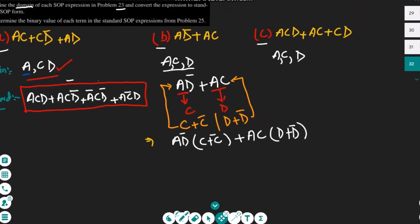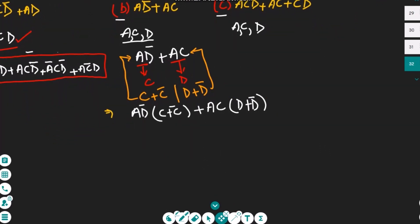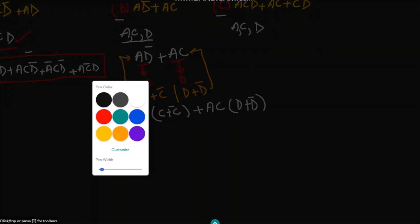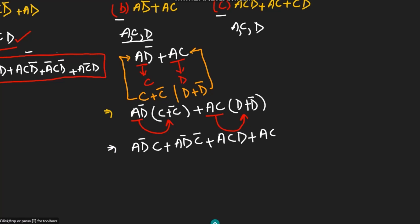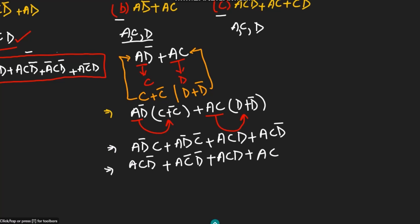Now multiplying these terms out, from ad'(c + c') we get ad'c + ad'c', and from ac(d + d') we get acd + acd'. Rearranging each term in the order of the domain variables, we get: acd' + ac'd' + acd + acd'.